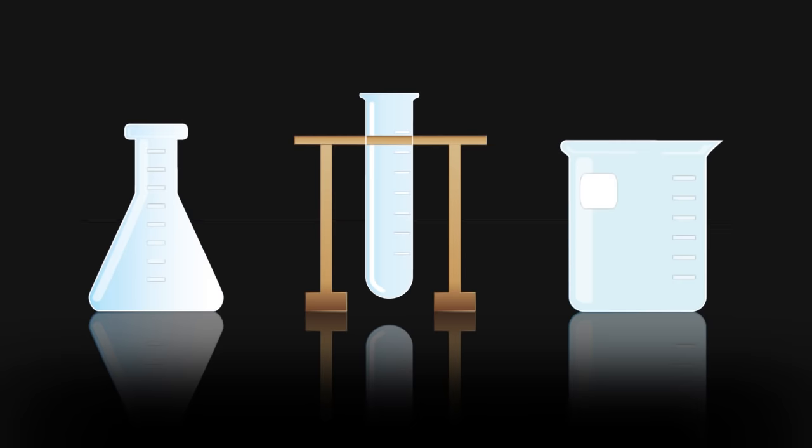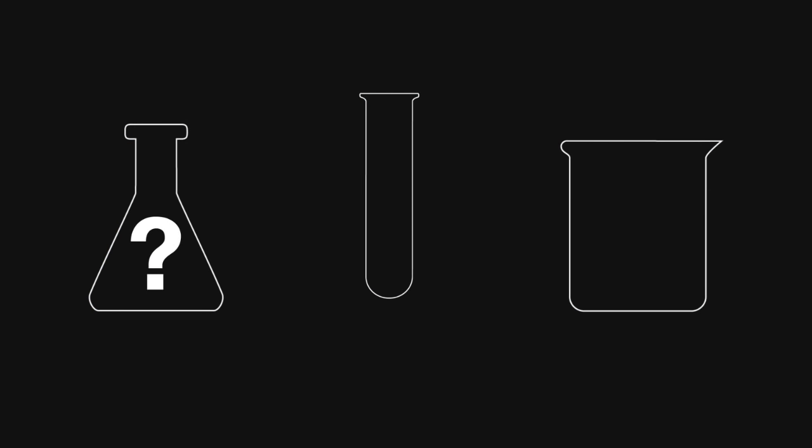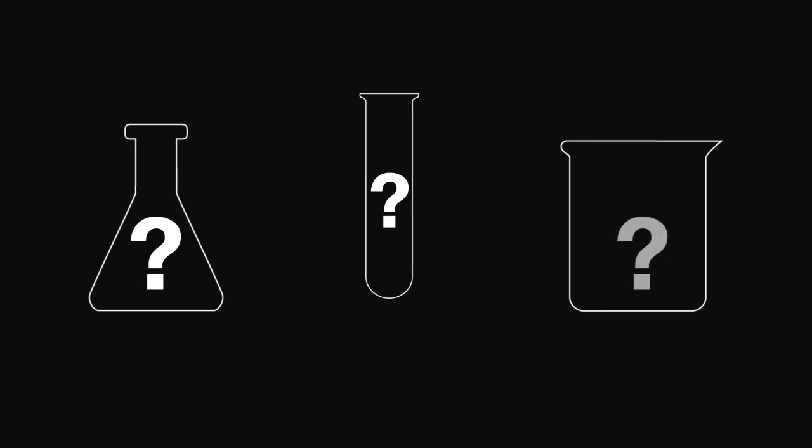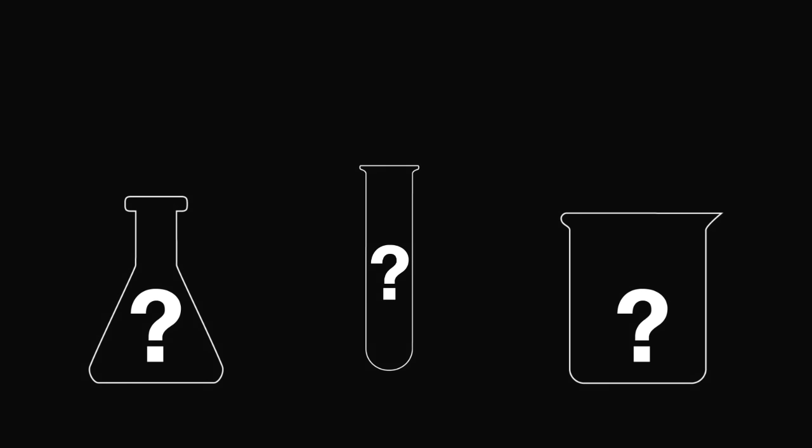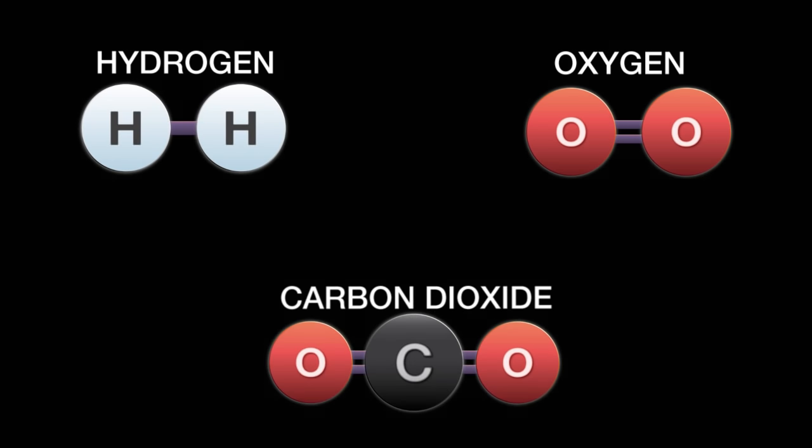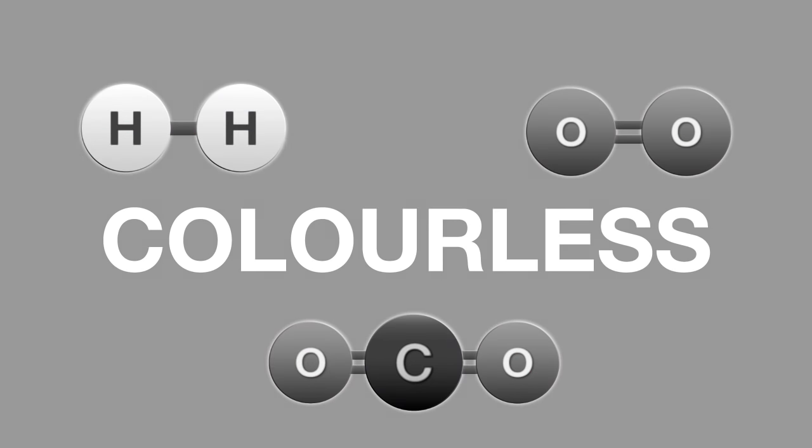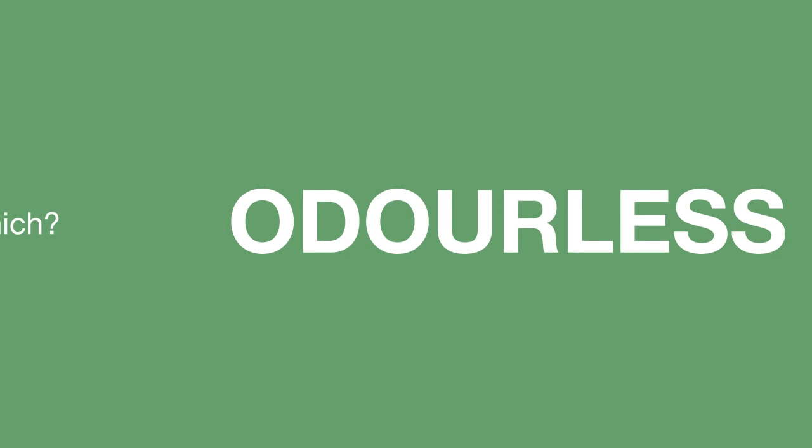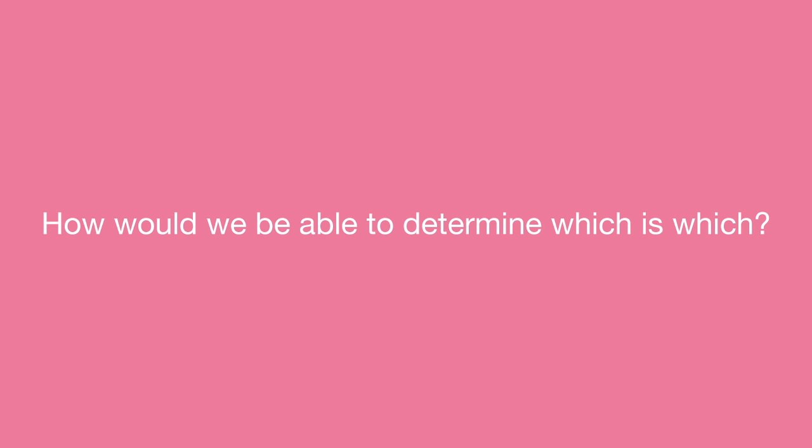We test for gases in the laboratory because it is nearly impossible to determine the identity of a gas just by its appearance. As an example, hydrogen, oxygen, and carbon dioxide are all colorless and odorless. How would we be able to determine which is which?